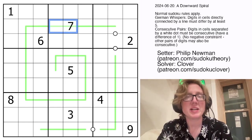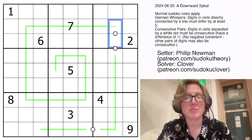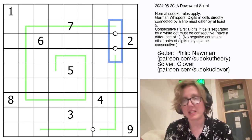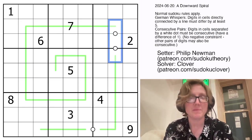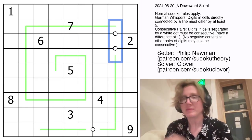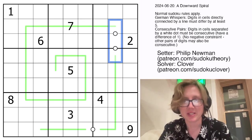And then finally, there are some white dots in the grid. Digits that are separated by a white dot have to be consecutive, so one of them is one bigger than the other. Not all possible dots in the grid are necessarily given.